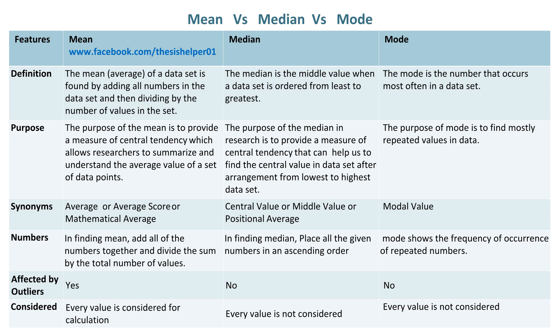The purpose of the mean is to provide a measure of central tendency which allows researchers to summarize and understand the average value of a set of data points. The purpose of the median in research is to provide a measure of central tendency that can help us find the central value in data set after arrangement from lowest to highest.